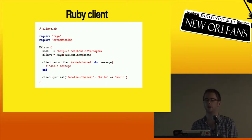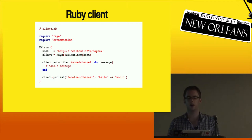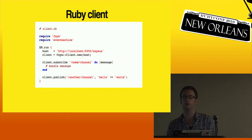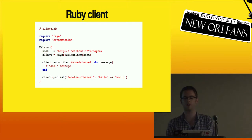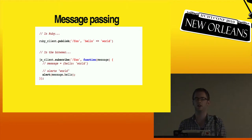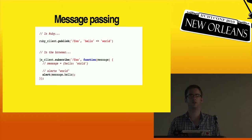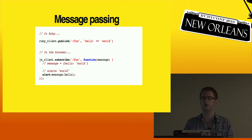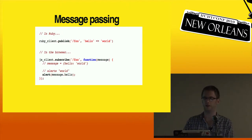The Ruby client has exactly the same API. You just have to wrap what you're doing in EventMachine. You subscribe to a channel and give it a block, and the block gets run with the incoming message whenever the client receives something. The publish API works exactly the same way. It interoperates between Ruby and JavaScript data types - if you publish a Ruby hash to a channel it will turn that into JSON, which gets deserialized in the browser and becomes a JavaScript object.